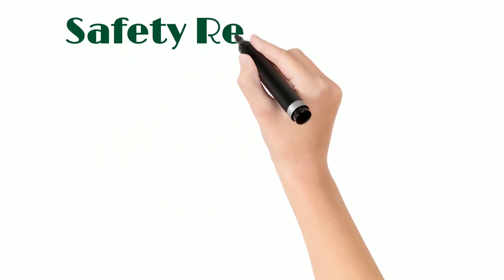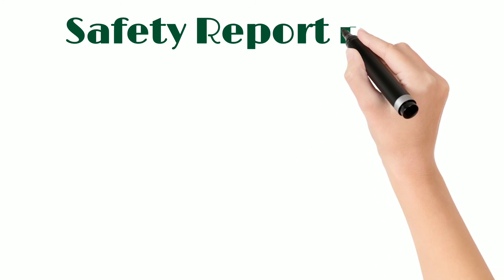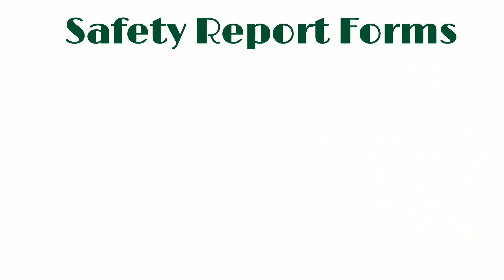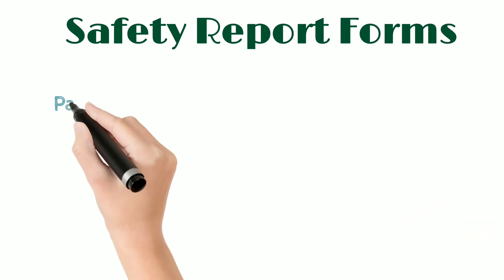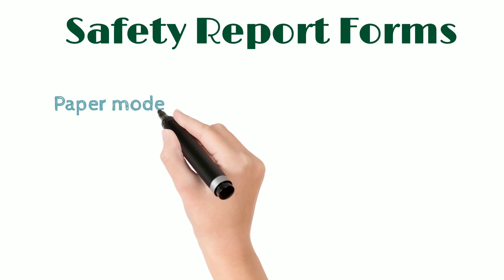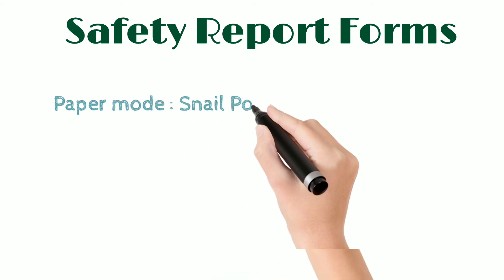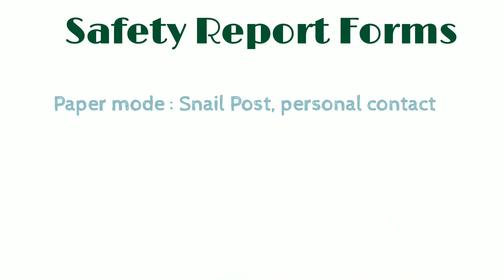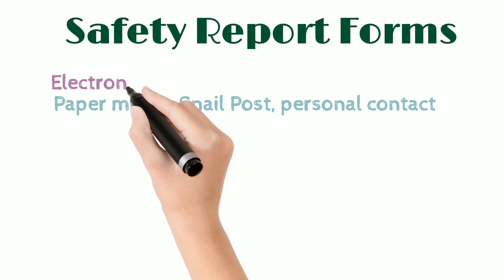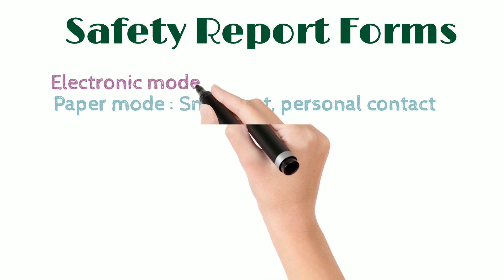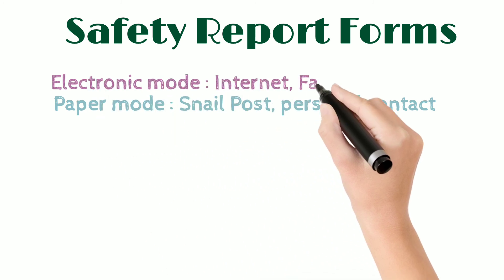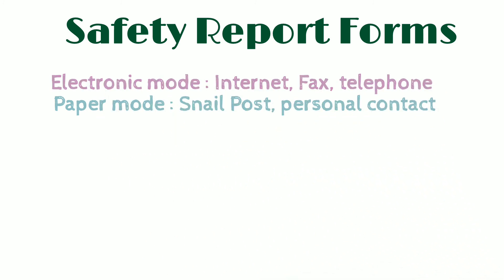We will now discuss the different safety report forms. These reports are submitted in both paper mode and electronic mode. Paper mode includes snail mail, post, and personal contact, while electronic mode includes internet, telephone, and fax. There are two types of forms: voluntary forms and mandatory forms.